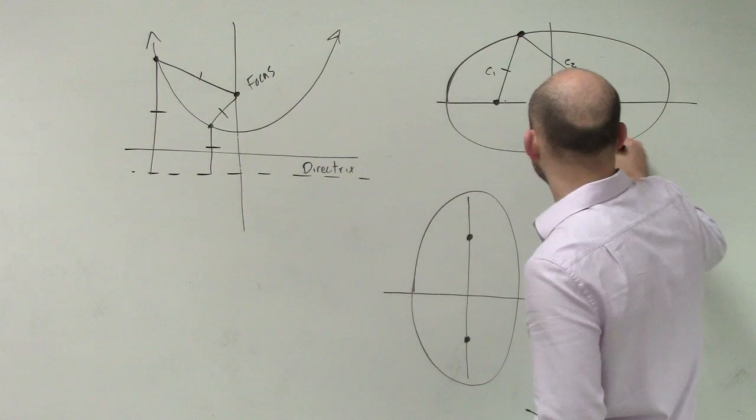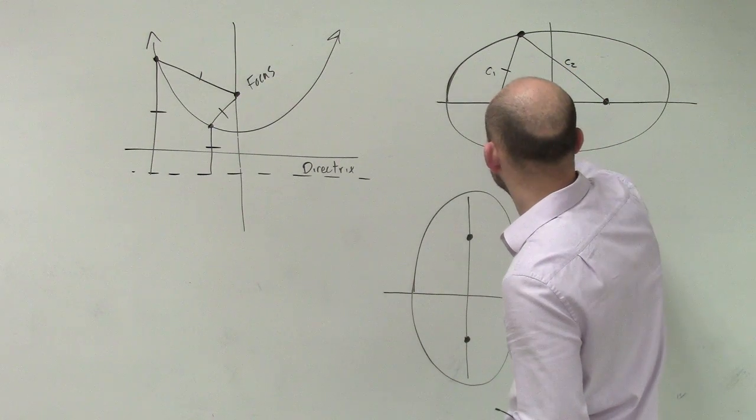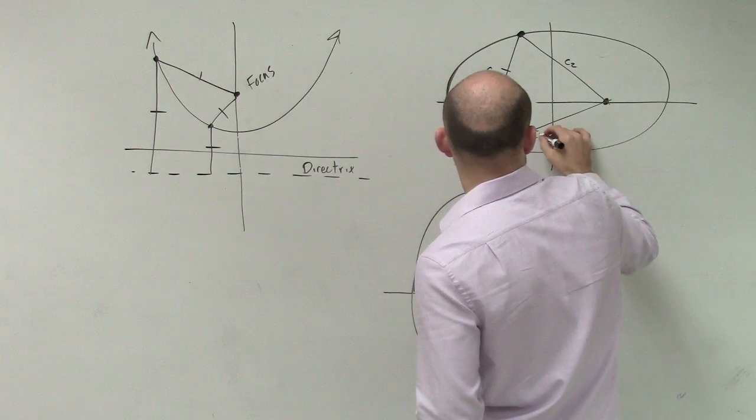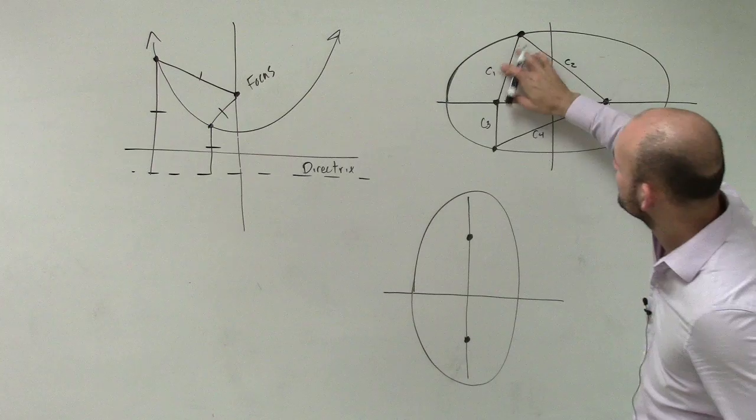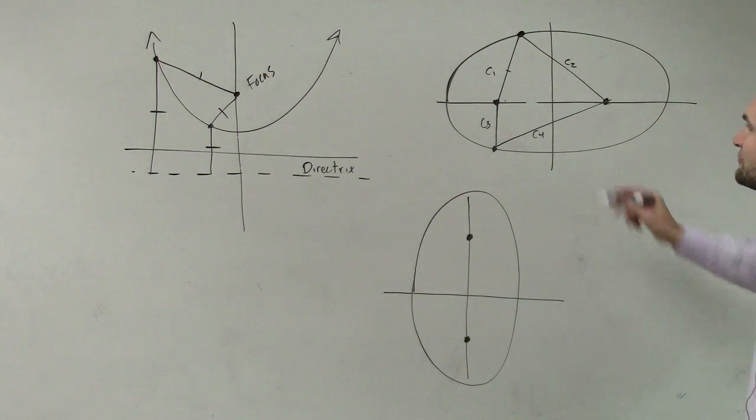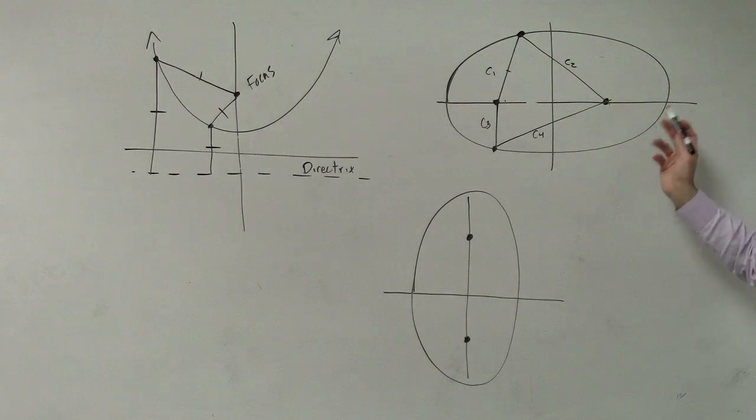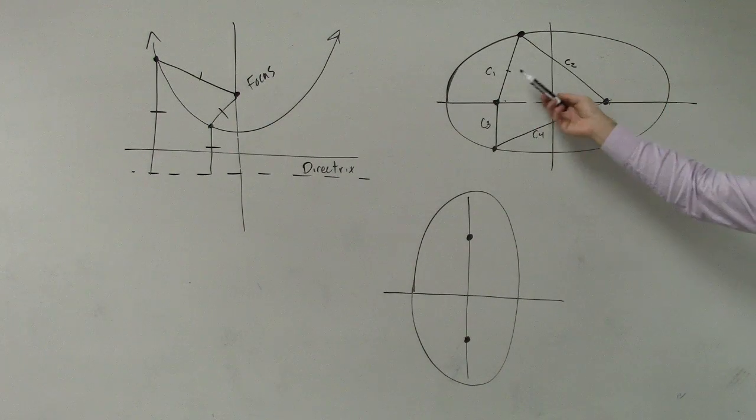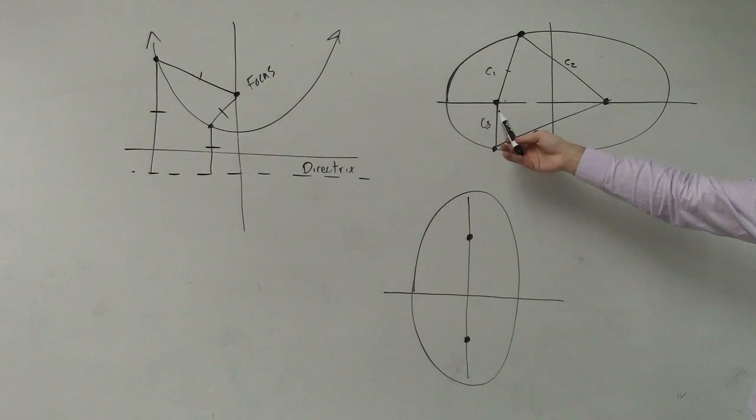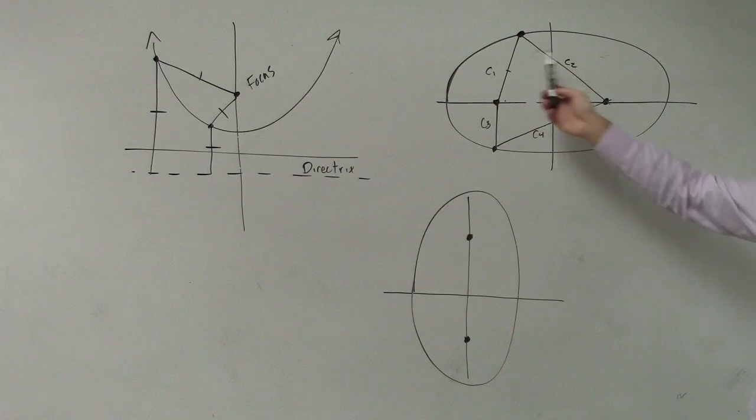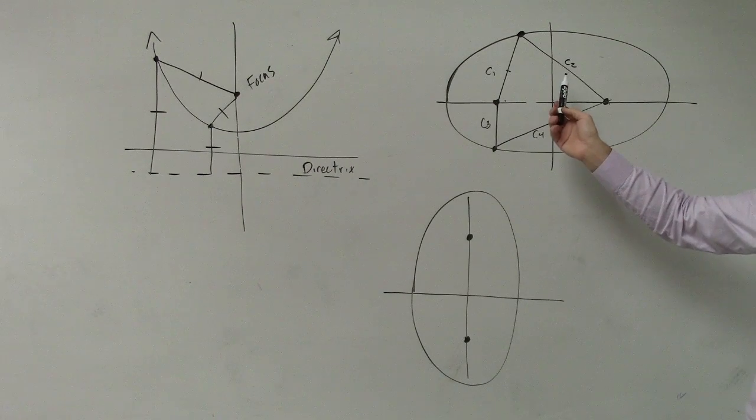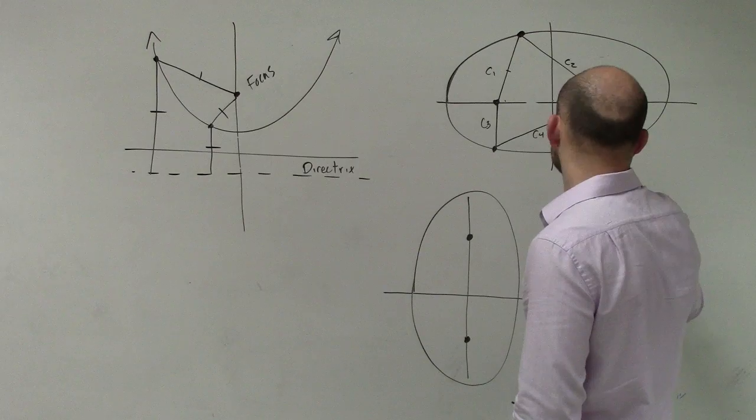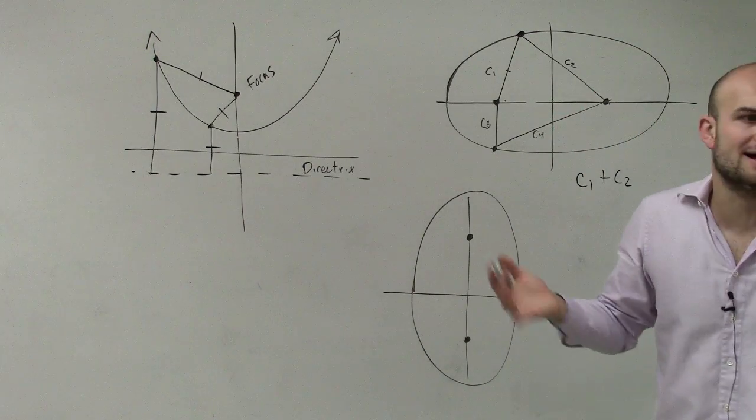Then let's maybe pick another point. Let's call this c3 and c4. What I want you guys to understand is, for every point on this ellipse, the addition or the sum of these distances from your foci to any point, the sum of these two lines, are always going to be constant. So therefore, you could say c1 plus c2 equals a constant number.